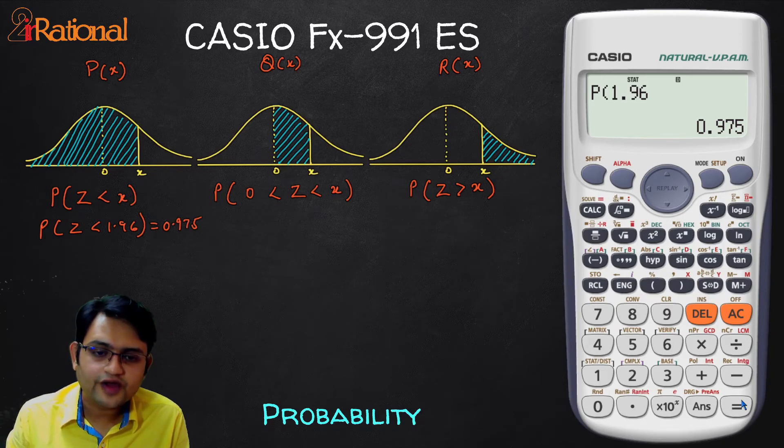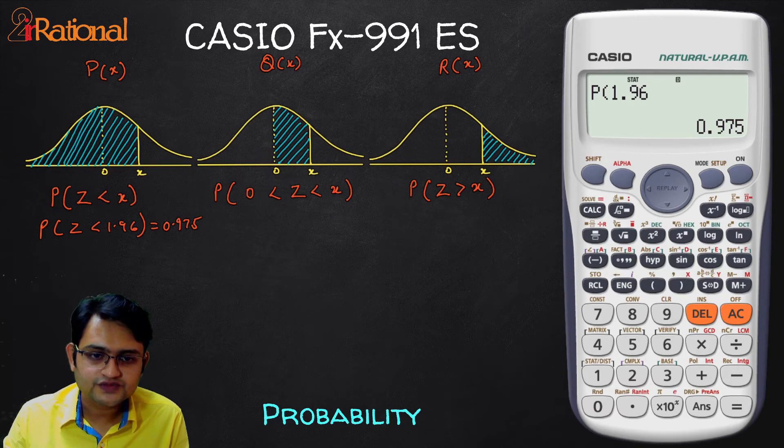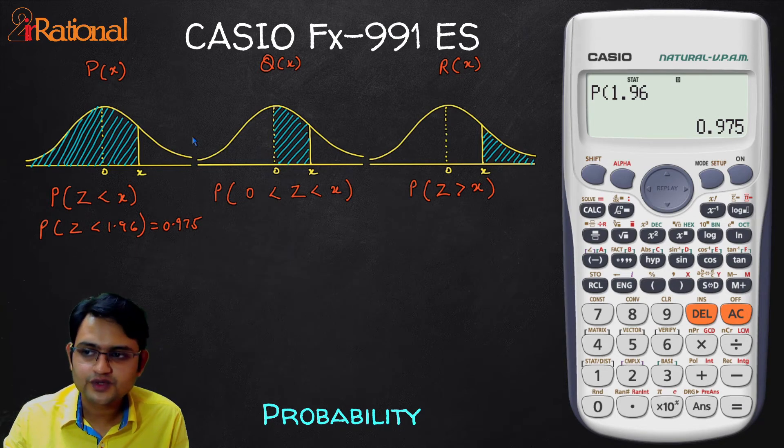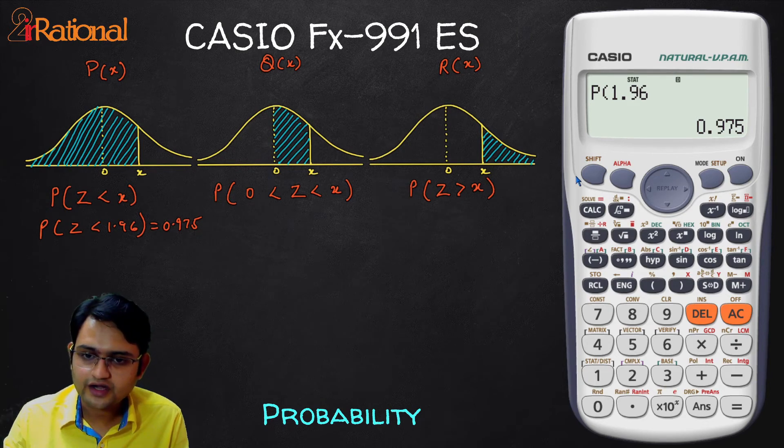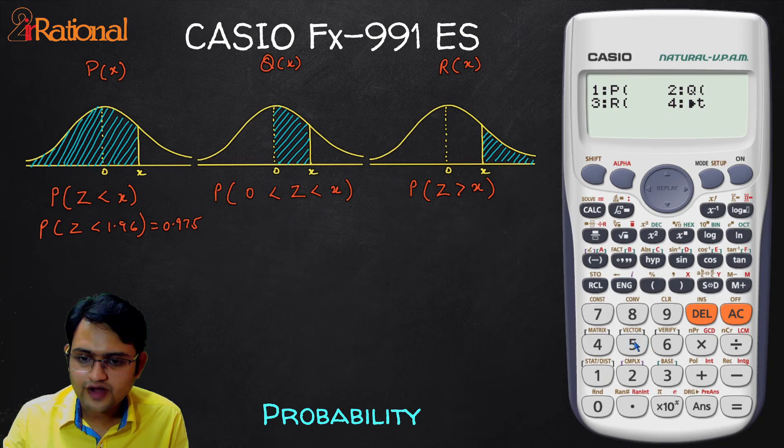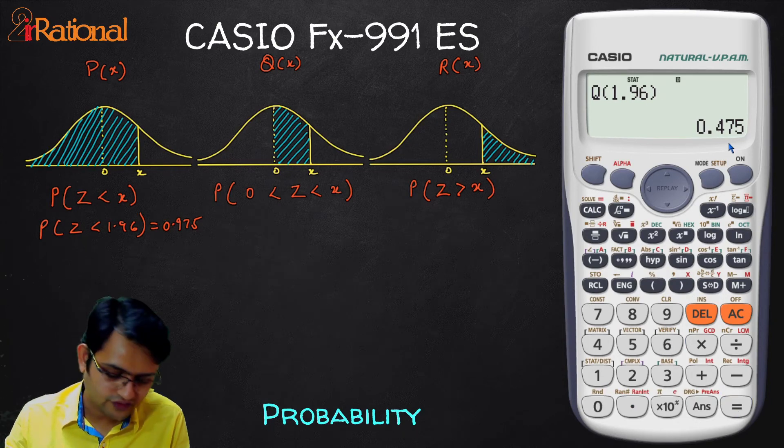If I wanted to find probability from 0 to X, this 1.96, we know it will be 0.5 less because this region minus infinity to 0 gives us probability as 0.5. So it should be this minus 0.5. Let's check that. For that, all I have to do is shift again 1, 5 and I'll go for 2 this time Q and if I put 1.96, we'll get 0.475.